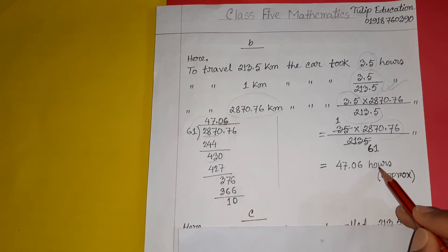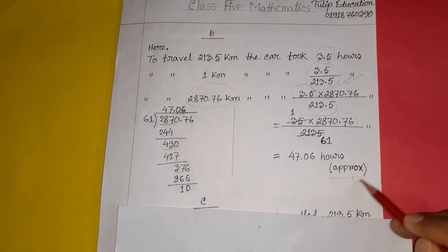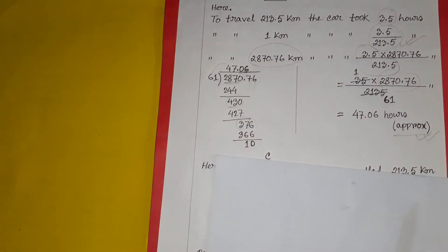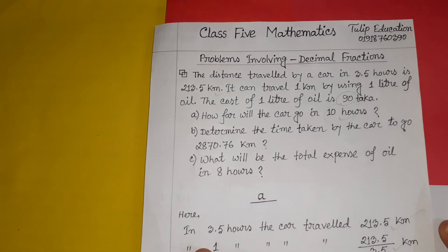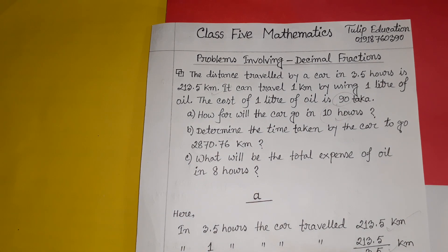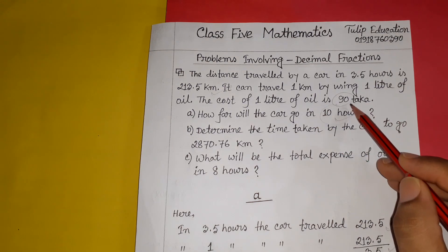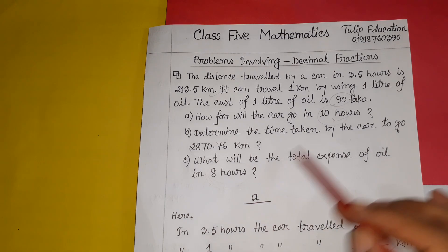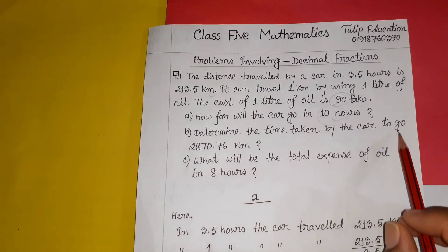Now for question three: what will be the total expense of oil in 8 hours? We know the cost of 1 liter of oil is 90 taka. We need to find the total cost of oil used in 8 hours. First we find how far the car travels in 8 hours, and then we will determine how much oil is used and multiply by the cost.